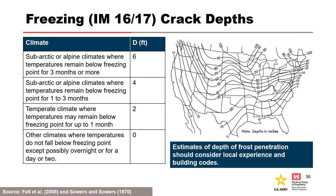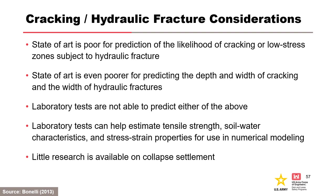Fell et al. 2008 provides guidance for crack depth based on climate; however, the most reliable source for depth of frost penetration is the local building code or structural load data tool for UFC 3-301-01 for Department of Defense locations from the whole building design guide. Identifying the location and conditions for cracking or hydraulic fracture is still subjective — the state of the art is poor for predicting likelihood of cracking or low-stress zones, and even poorer for predicting depth, width, and width of hydraulic fractures. Numerical modeling can help inform judgment.